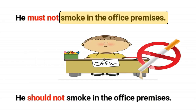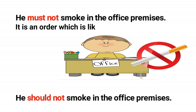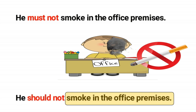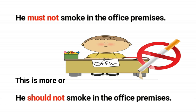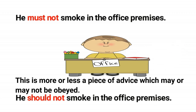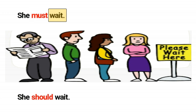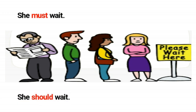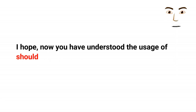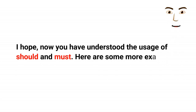He must not smoke in the office premises — it is an order which is likely to be obeyed. He should not smoke in the office premises — this is more or less a piece of advice which may or may not be obeyed. She must wait — it's an order. She should wait — it's a piece of advice.